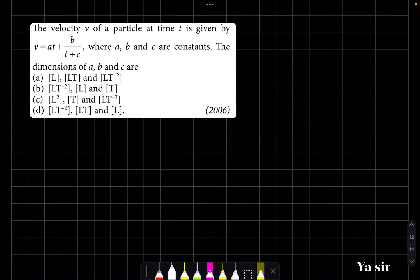Okay, hi everyone. So next question: the velocity v of a particle at time t is given by v equals at plus b divided by t plus c, where a, b, and c are constants. The dimensional formula of a, b, and c.